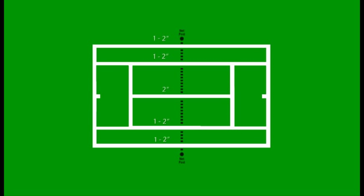The other lines of the court shall be between one inch and two inches wide, except that the baselines may be up to four inches wide. All court measurements shall be made to the outsides of the lines and all lines of the court shall be of the same color, clearly contrasting with the color of the surface.